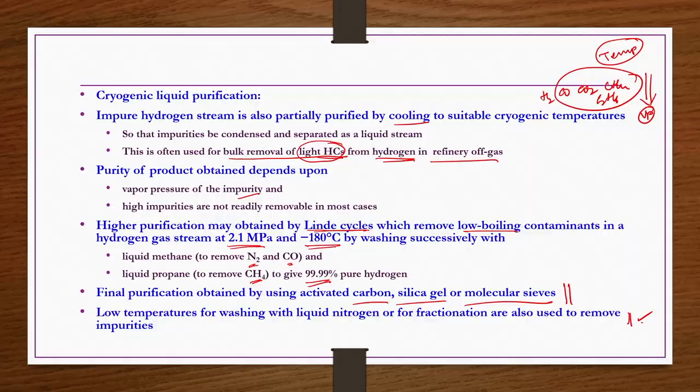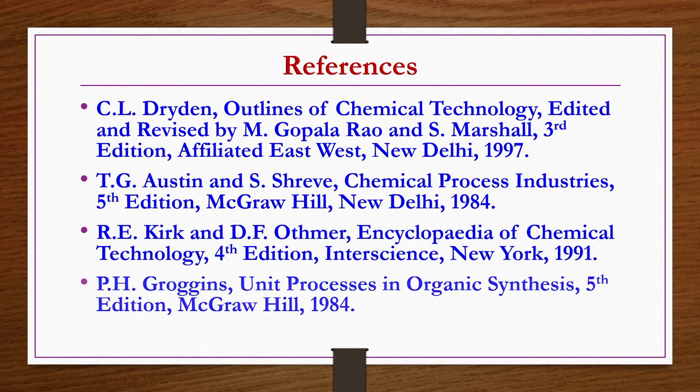That covers hydrogen production and purification — removing impurities from gas mixtures to obtain pure hydrogen. Some processes were covered in today's lecture, while others were discussed in previous lectures. The reference for this lecture is Chemical Process Industries by Austen and Shreve. Thank you.